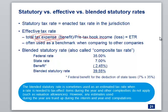Blended rates are really just multiple jurisdictions blended into one rate. You can see a simple example here where we've taken the federal rate and a state rate. If you're in a state with a 7% tax rate, your blended rate is really the combination of the federal and state rates — and for every dollar of state tax you pay, you get a federal deduction. So a blended rate of 38% means federal and state net of the federal deduction.